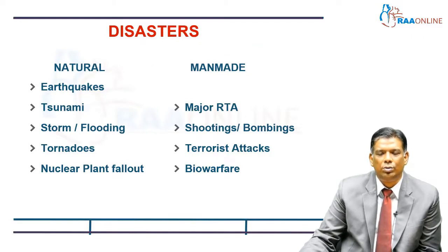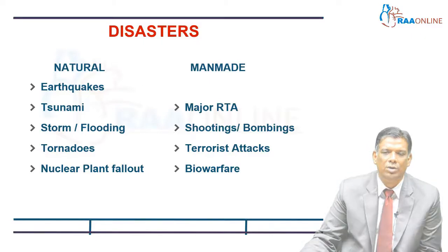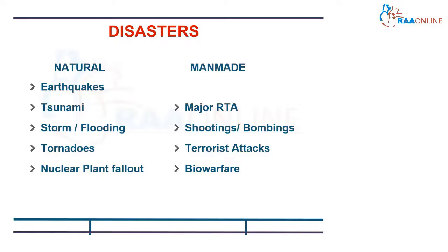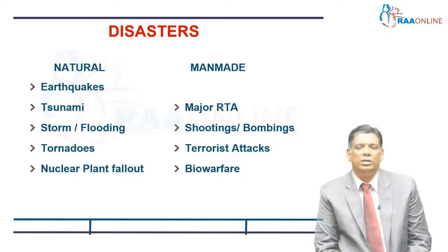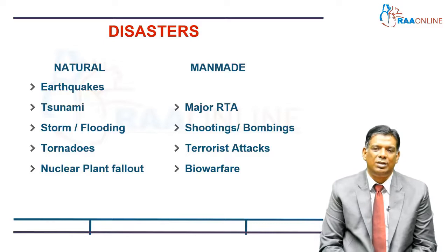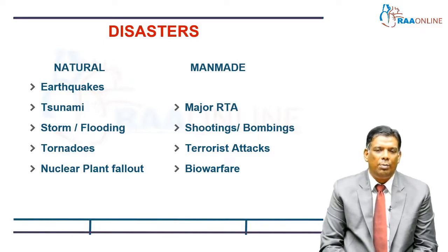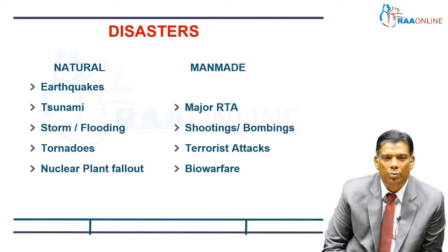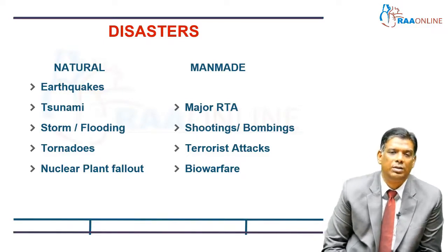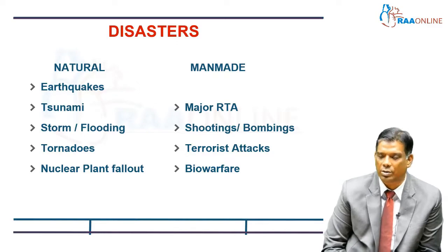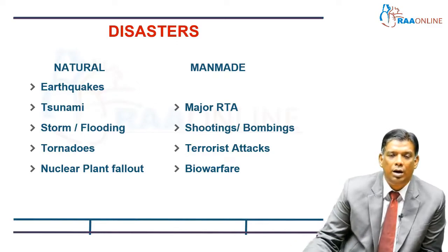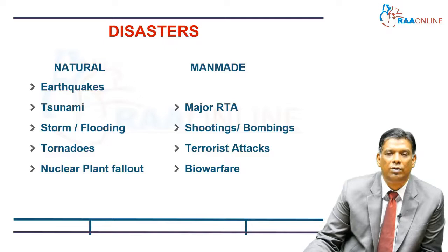The disasters that can contribute to all of these can be natural as well as man-made. Man-made is a little more common, especially because of major road traffic accidents. You can have RTAs, shootings and bombings and terrorist attacks, and bio-warfare is going to be a part of the future. Naturally, we can also have earthquakes, floodings, tsunamis, tornadoes, as well as inadvertent nuclear plant fallouts.